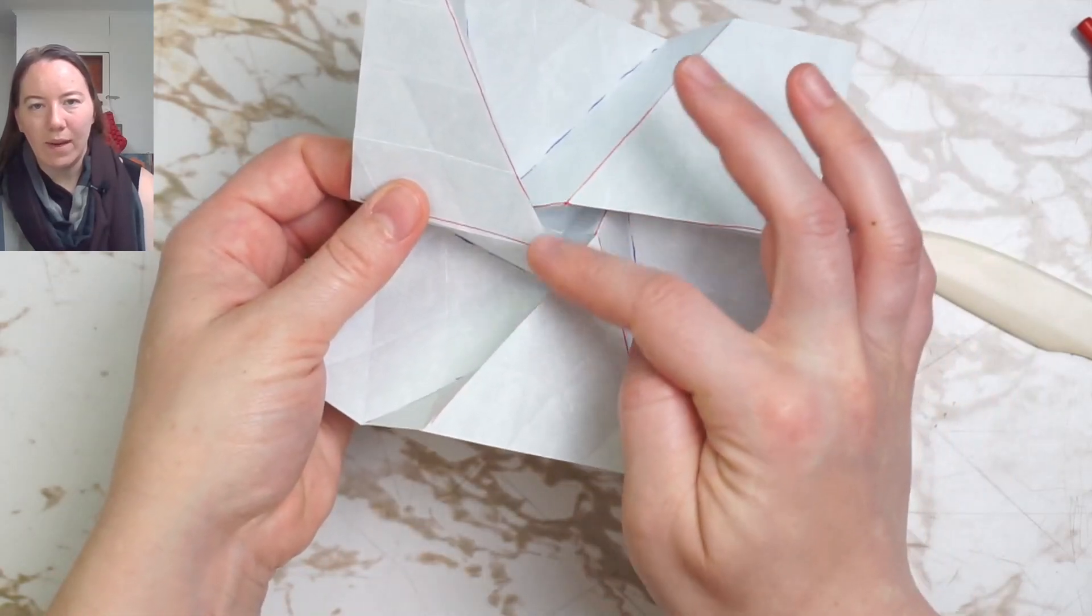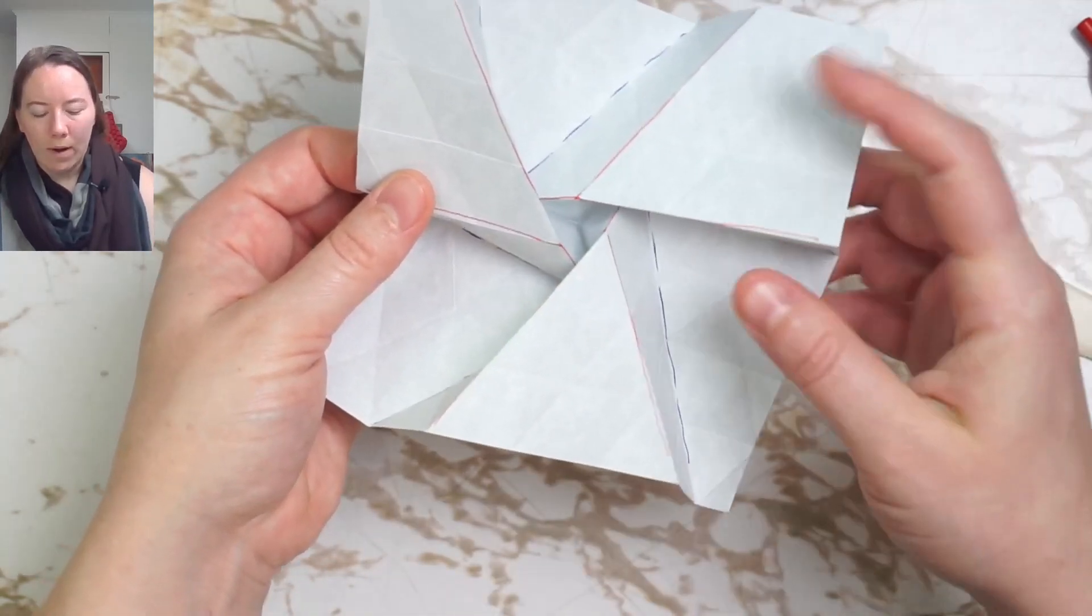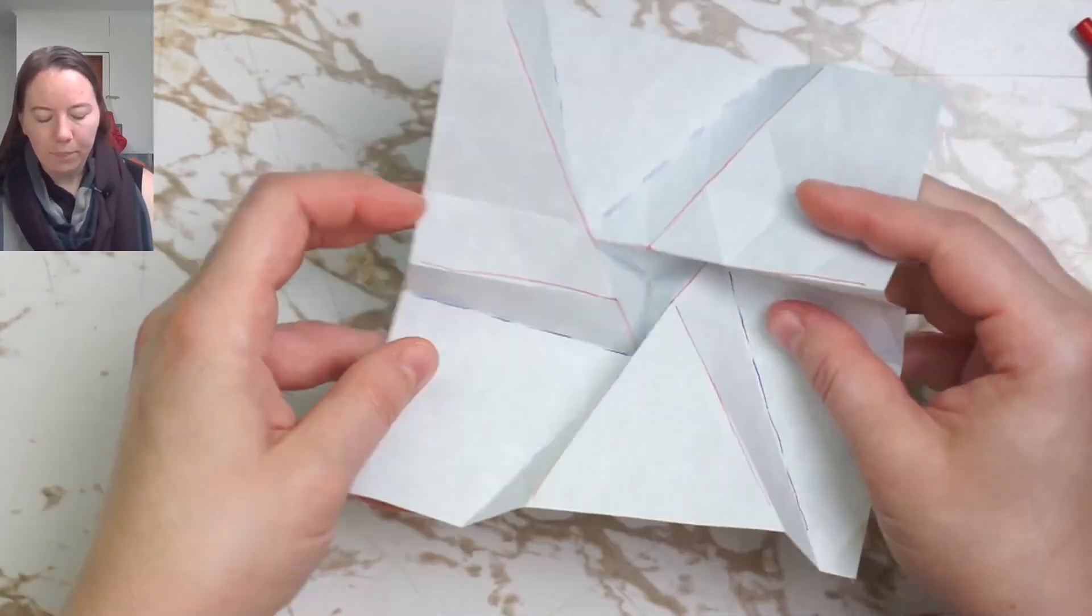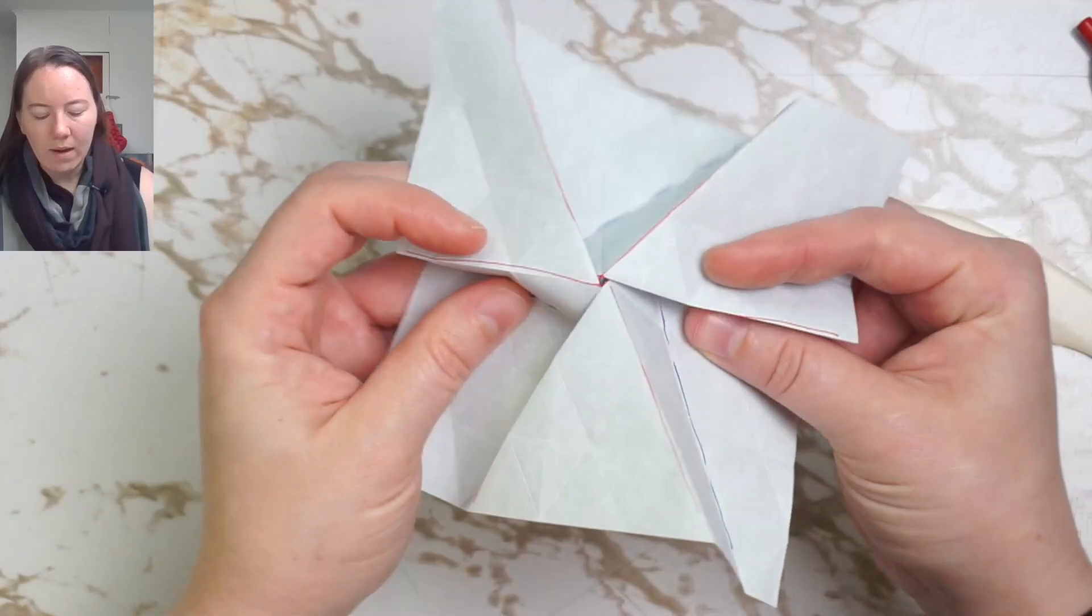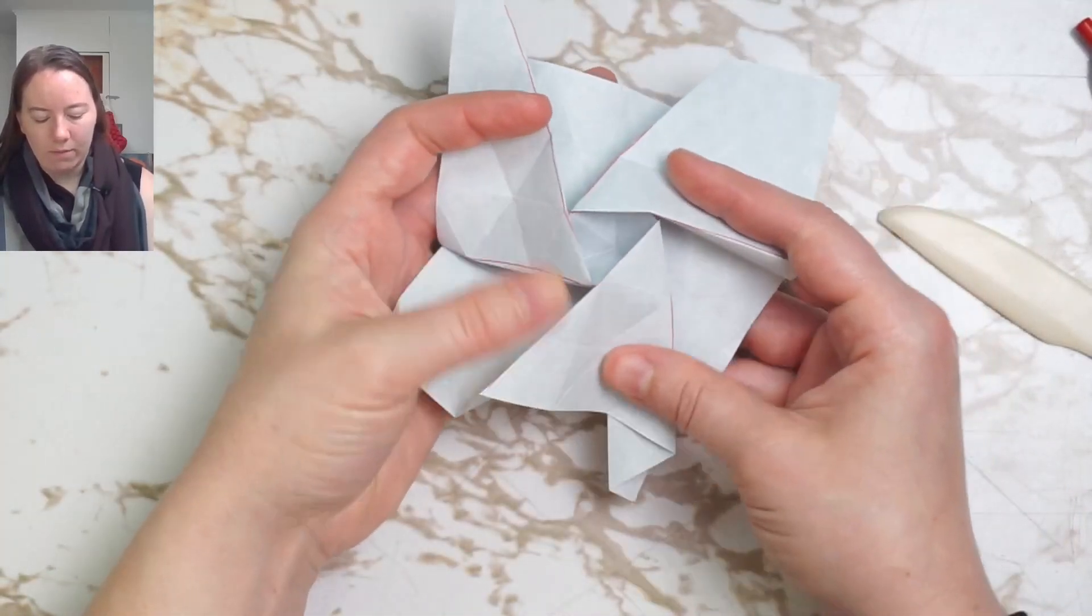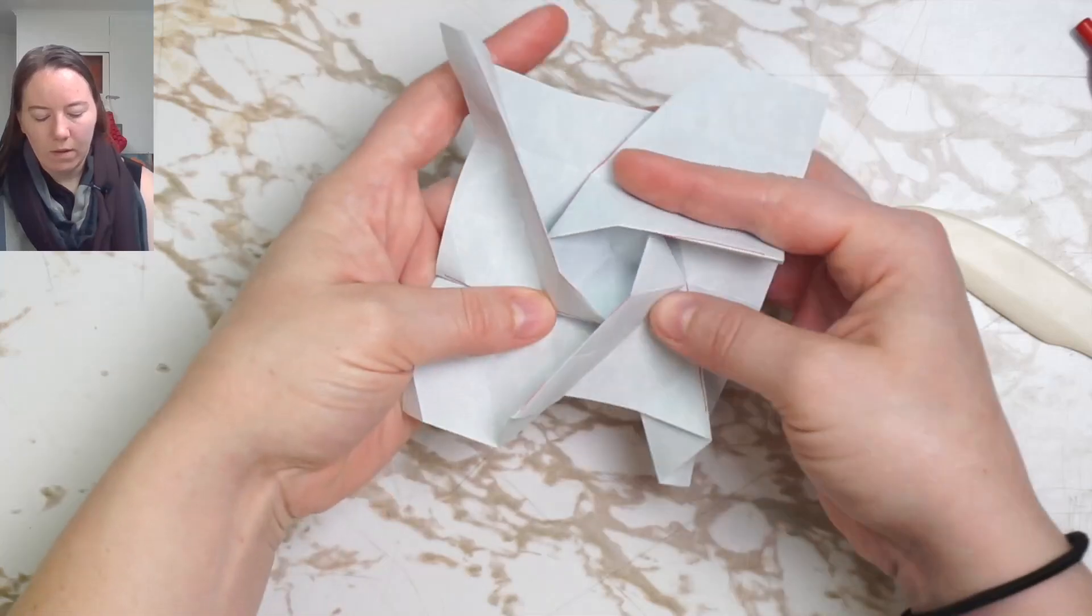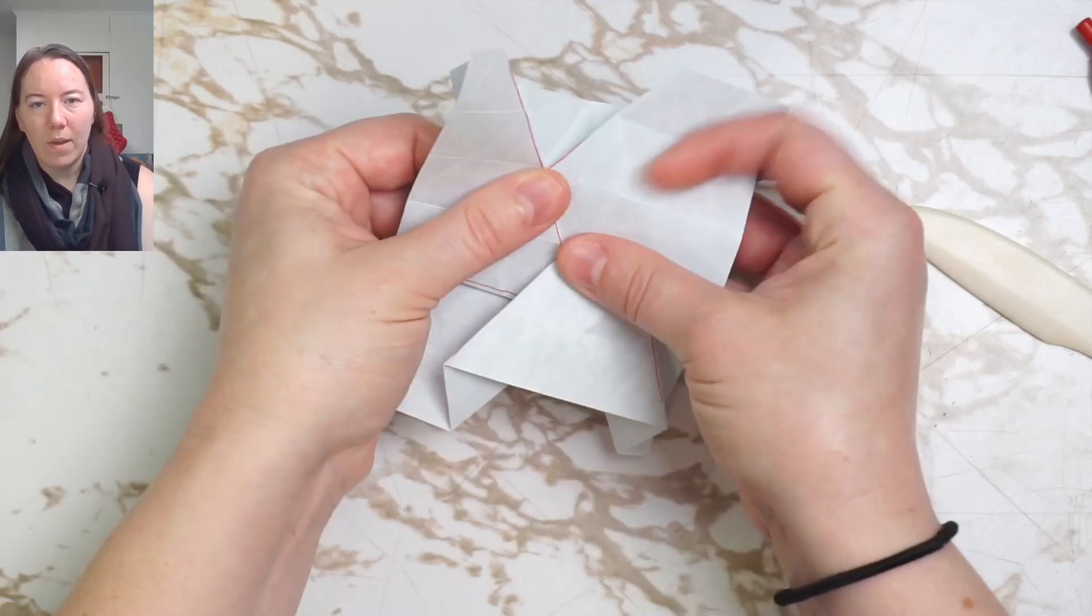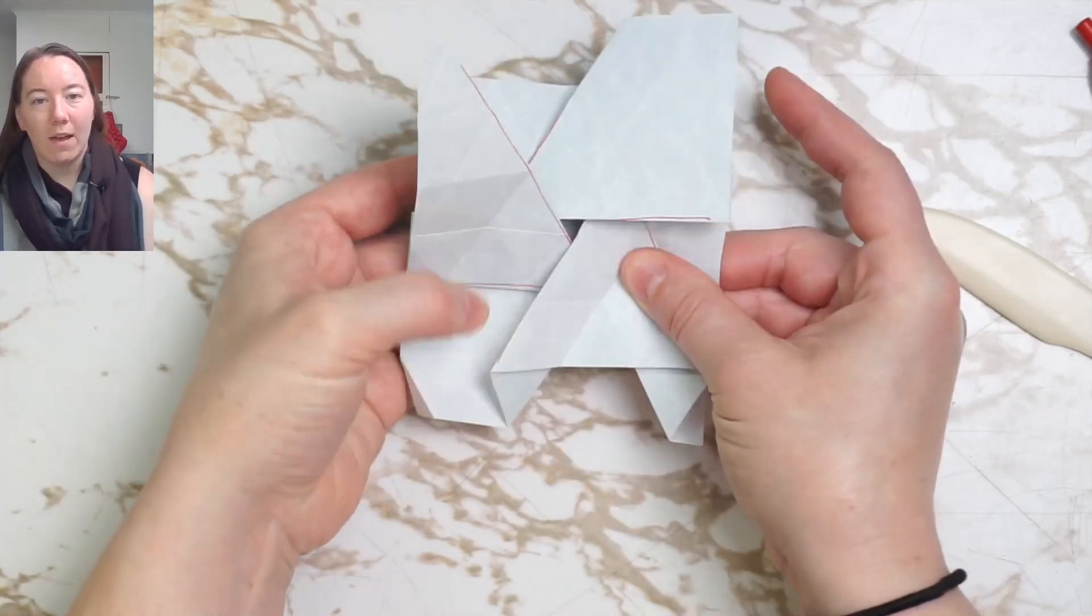So there's these three points where kind of the tributaries of the mountains are coming together. And so you bring them in and then up and then out. All on grid lines and we'll need to tuck them in in order to get flat again.